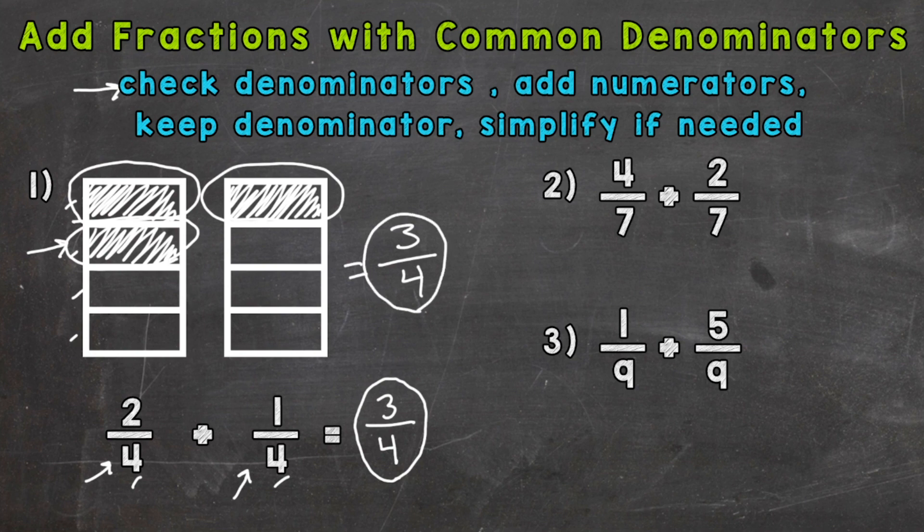So let's go to number two. So again we always check our denominators and they're common denominators there or like denominators. If you hear common or like denominators they mean the same thing. So we have a seven for both of our fractions. That means we can add our numerators now. Four plus two is six. Keep our denominator of seven the same and then simplify if needed. Now six-sevenths is in simplest form. The only common factor between six and seven is one. So this is our final answer. If you ever need help with simplifying fractions I do have another video that breaks that process down. I'll drop that link down in the description.